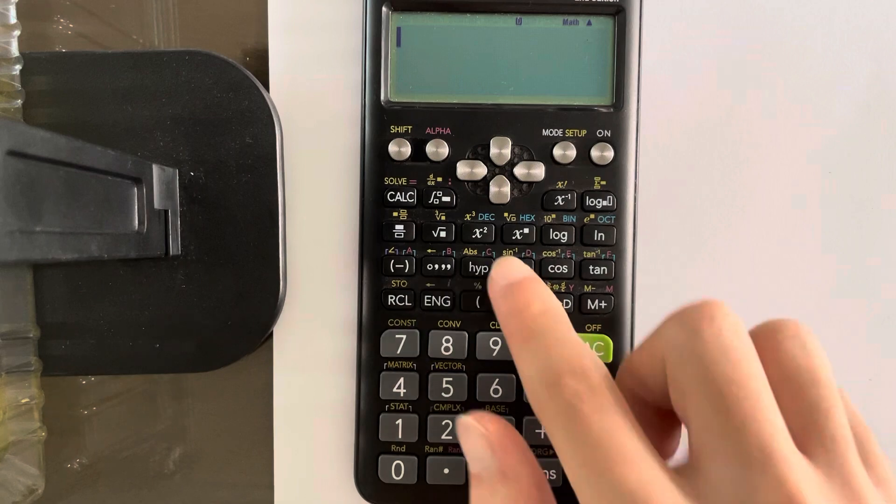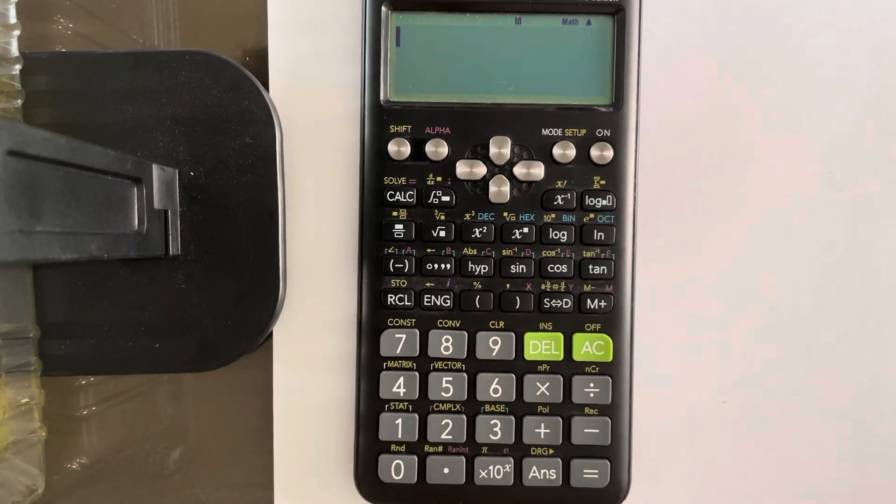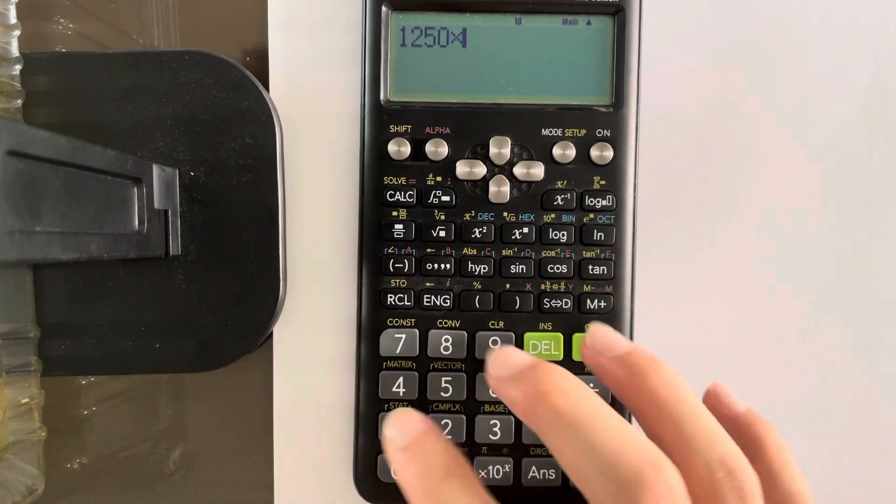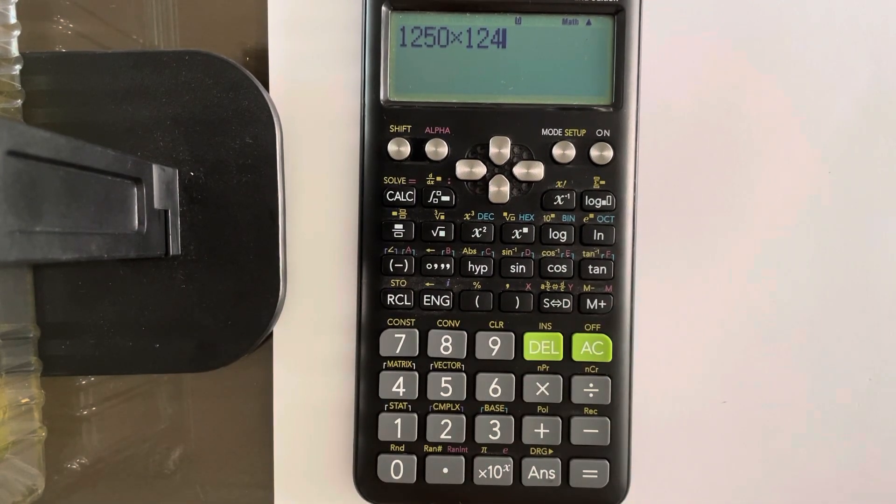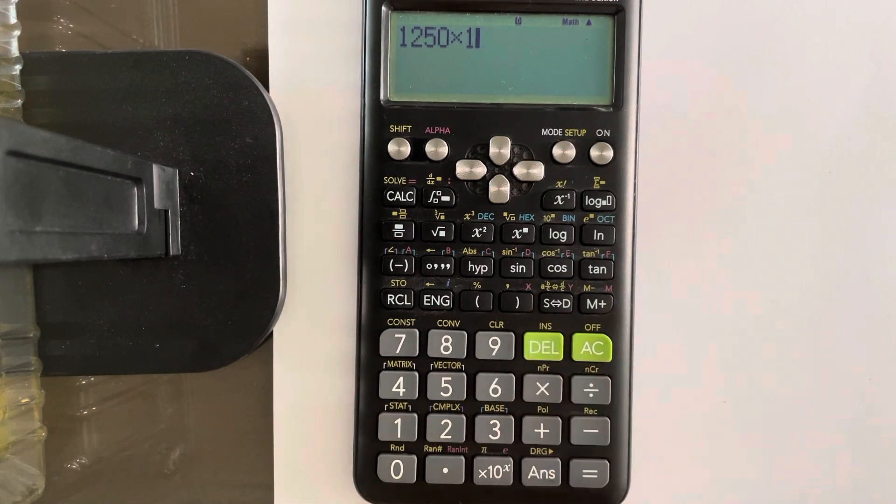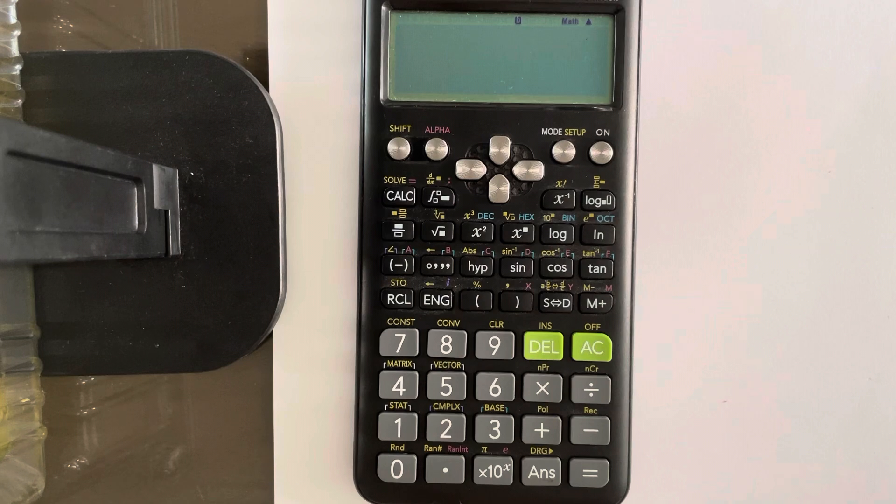If you need to do trigonometry, sine, cosine, tangent, that's all here. And that's pretty much all you have to know for your GCSE maths questions. One more thing. If you have 1250 multiplied by 1, 2, 4, and you made a mistake, you need to change your digit but you don't want to reset everything, right? Just press this delete key. It'll delete one key at a time. That's pretty much all you need to know.